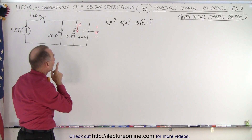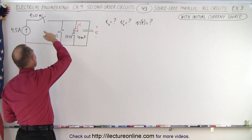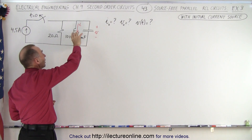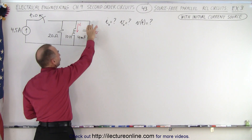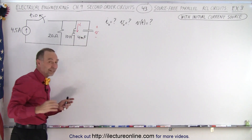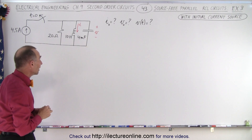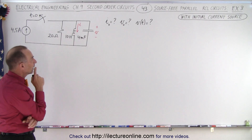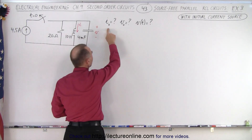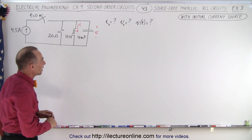Once you open the switch, things keep on working because now there's potentially a voltage across the capacitor, or there's an initial current through the inductor that will keep things going for a while until things die down. What we need to do is find the initial current, the initial voltage, and an equation for the voltage as a function of time.